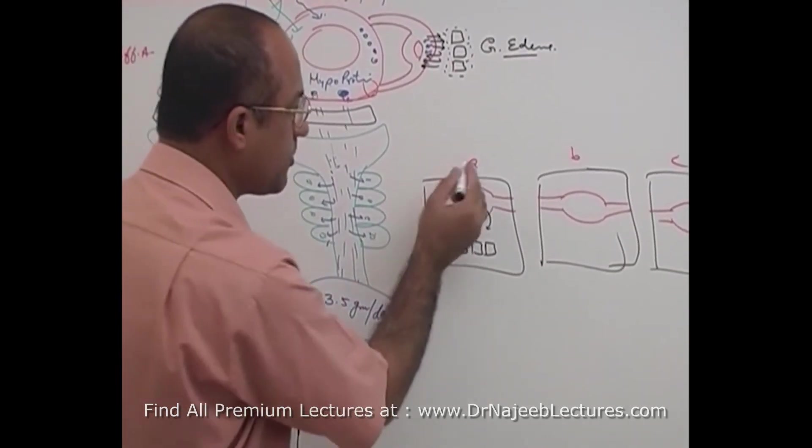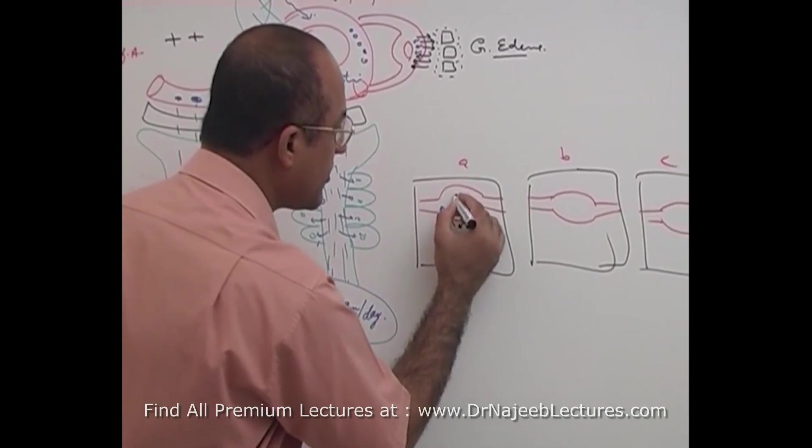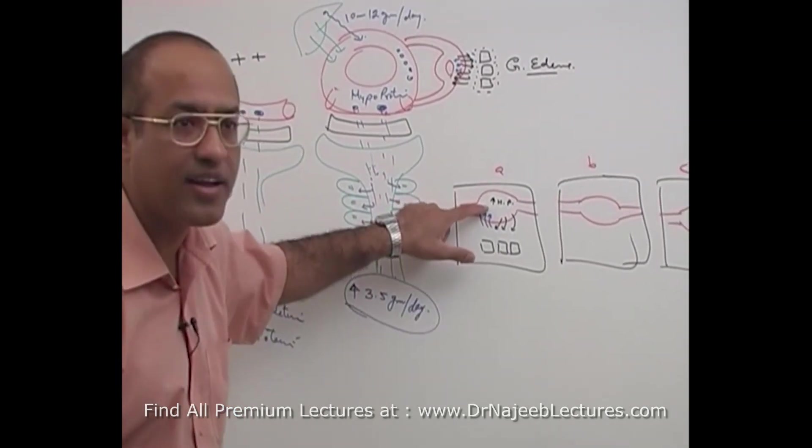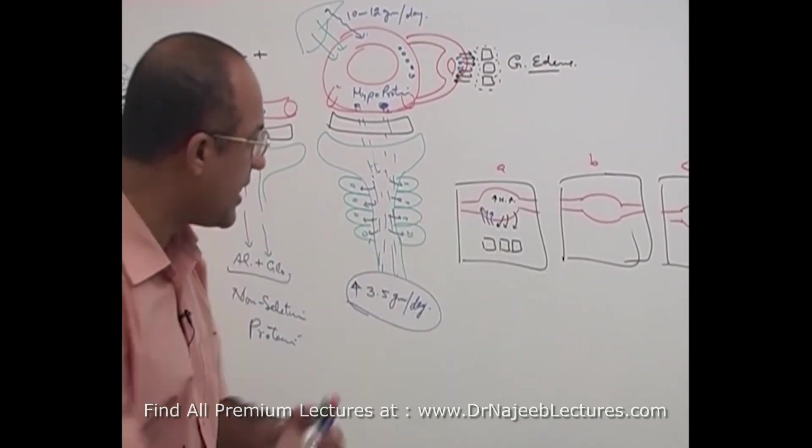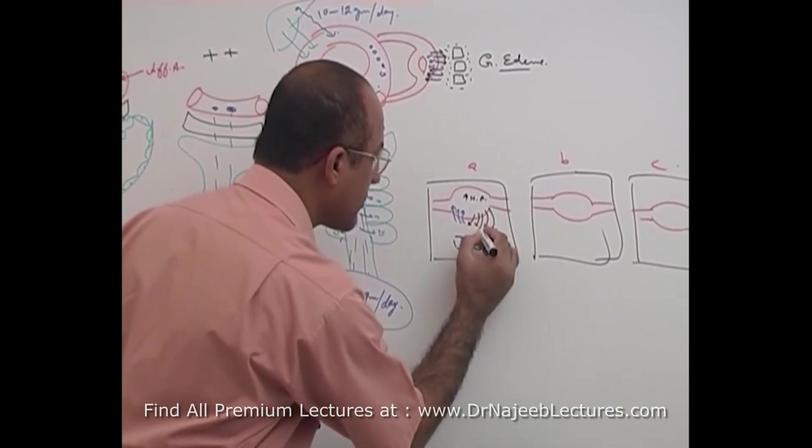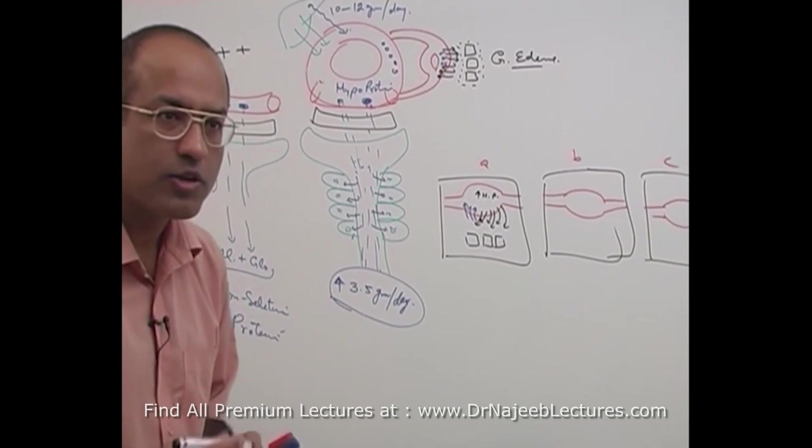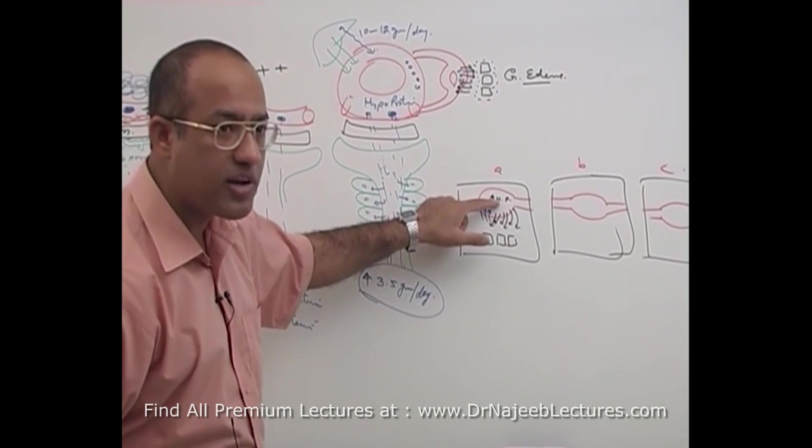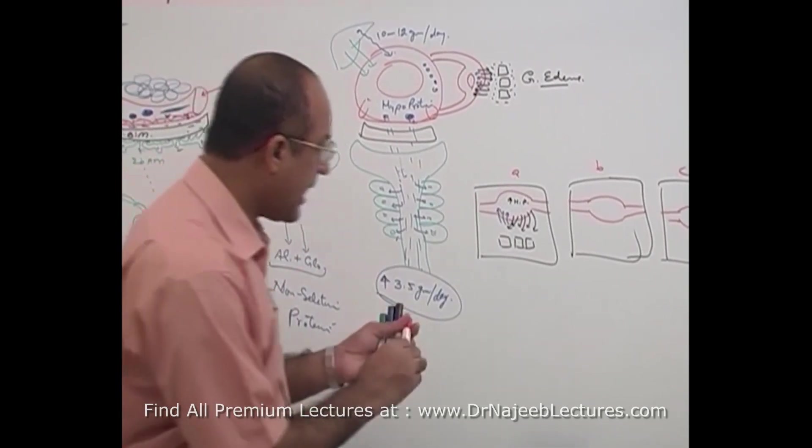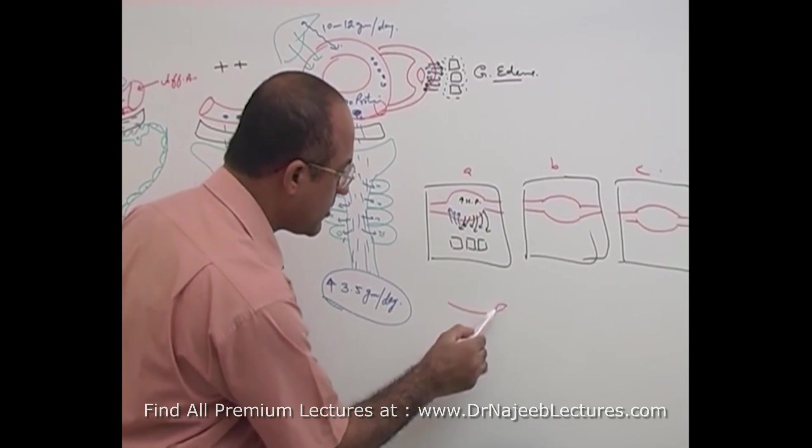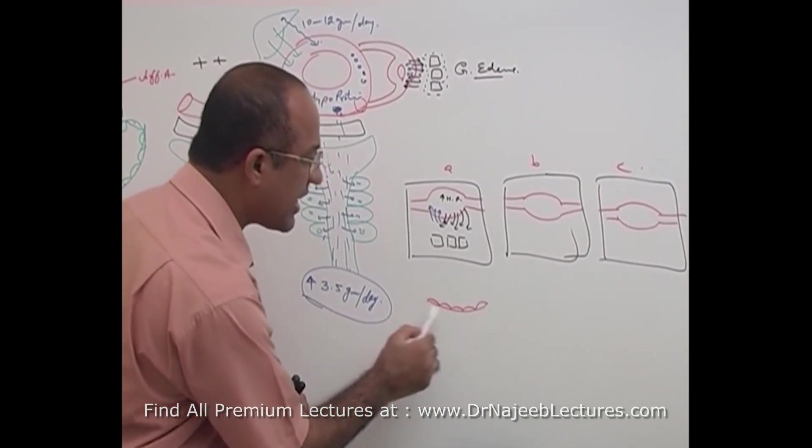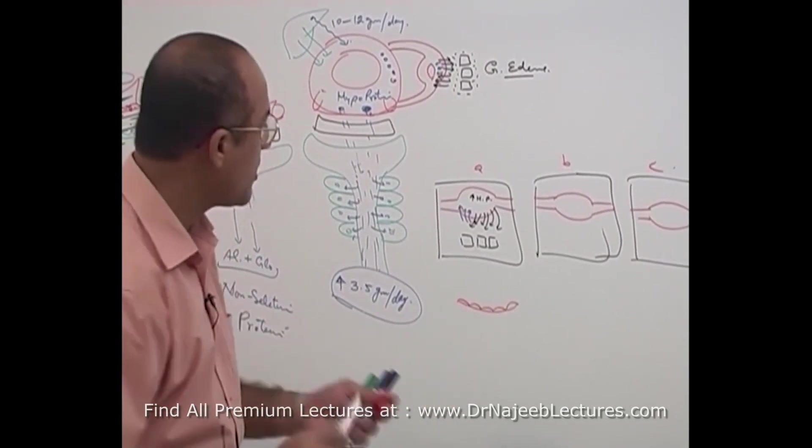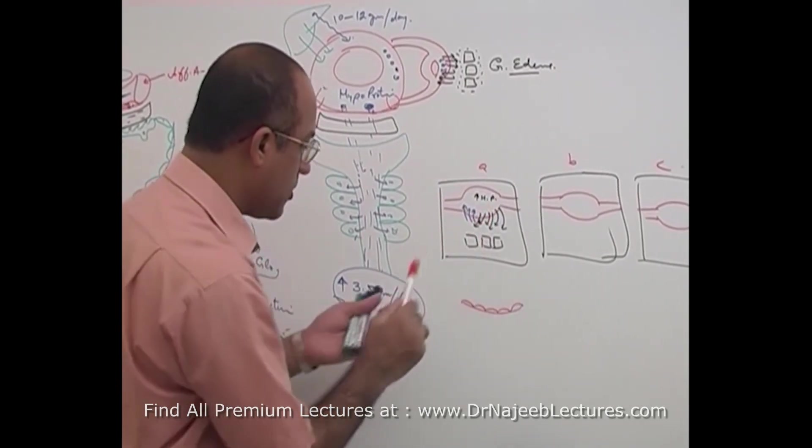In first patient, patient A, there is increased hydrostatic pressure. Due to some reason hydrostatic pressure becomes very very high. If pressure in the capillaries becomes very high then leakage of the fluid will be too much. Now fluid is extra filtered because of the high pressure but endothelial cells have normal permeability. Only the pressure dynamics are changed.